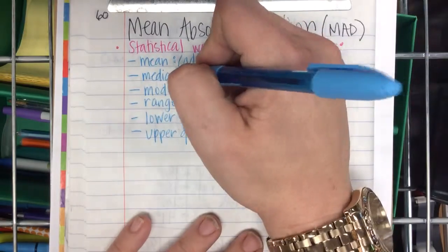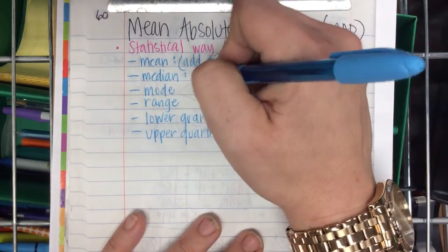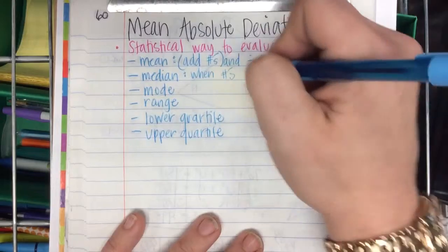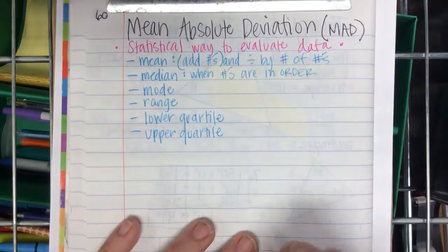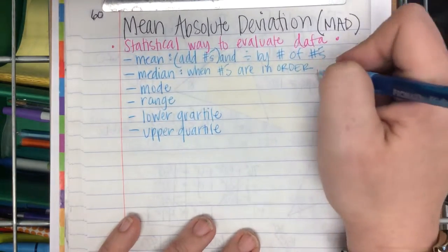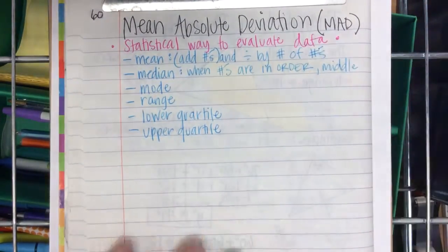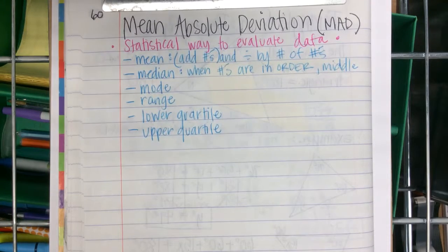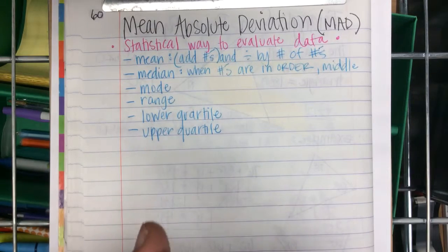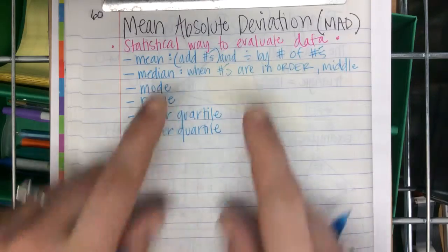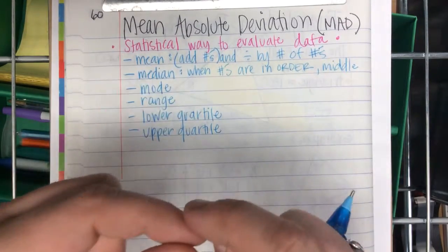The median is when the numbers are in order. The numbers must be in order from least to greatest, greatest to least. They've got to be in numerical order. If there are two numbers smack dab in the middle, you find their mean. You add them together and divide by two.